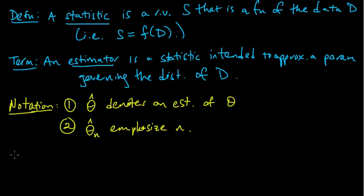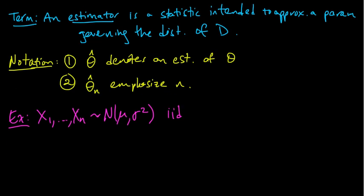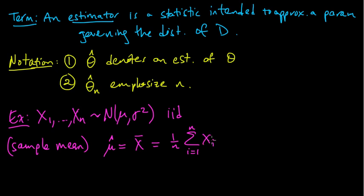Let's look at an example to make this concrete. Let's say our data, x1 through xn, are from a normal distribution with mean mu and variance sigma squared, and they're iid. If we wanted to estimate the mean, the natural choice would be the sample mean. We might write theta hat or use x with a bar over it to denote the sample mean, which is 1 over n times the sum from 1 to n of xi.